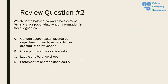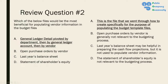Question two: which file is most beneficial for populating vendor information in the budget files? A) General ledger detail pivoted by department, then by GL account, then by vendor; B) open purchase orders by vendor; C) last year's balance sheet; or D) statement of stockholders' equity. The answer is A. That is the specific file we created for populating budget templates with vendor information. Open purchase orders are generally irrelevant; last year's balance sheet is used for cash flow projections, not departmental expense files; and the statement of shareholders' equity is generally not relevant.